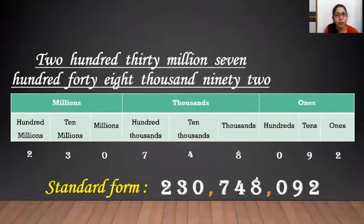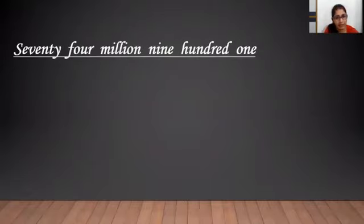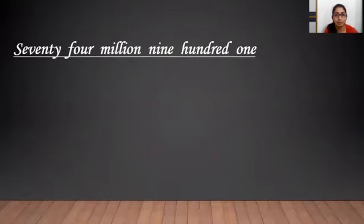Let's have one more example. Let's say, seventy four million nine hundred one. Children, did you notice the number name is too short? Yes! Because we do not have the thousands period here in the number name.